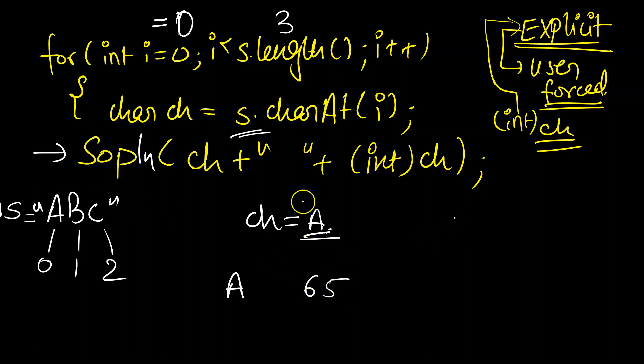In a similar way, when i value is 1, it will check s.charAt(1) and get the character at 1 position, which is B. So System.out.println will print B and int ch. The ASCII value of B is 66. Again, when i is 2, it will extract the character at the 2nd position, which is C, so it will print C and the ASCII value 67.